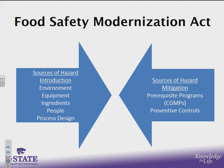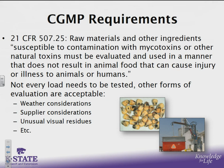For that reason, prerequisite programs, some of which might be current good manufacturing practices, as well as preventive controls, can be employed to help minimize any occurrence of these hazards within the finished product. The Preventive Controls for Animal Food Rule 21 CFR 507 has a specific section that discusses mycotoxins in their current good manufacturing practice requirements. These are actions or items being used to prevent mycotoxins in the finished product, and this is a regulatory requirement stating that raw materials and other ingredients susceptible to contamination with mycotoxins or other natural toxins must be evaluated and used in a manner that does not result in animal food that can cause injury or illness to animals or humans.